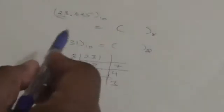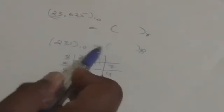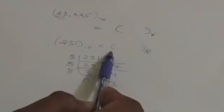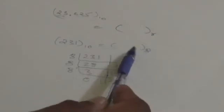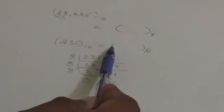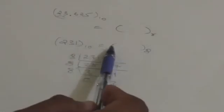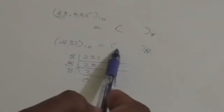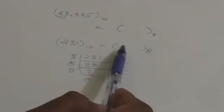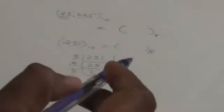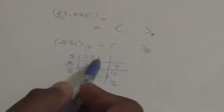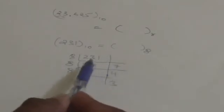First of all we will learn how we can convert the integer part of a decimal number into a number of different base. Suppose there is an integer 231 and we want to convert it into a number of different base — suppose we want to convert it into a number whose base is 8, that is, an octal number, because numbers of the octal number system have base 8.